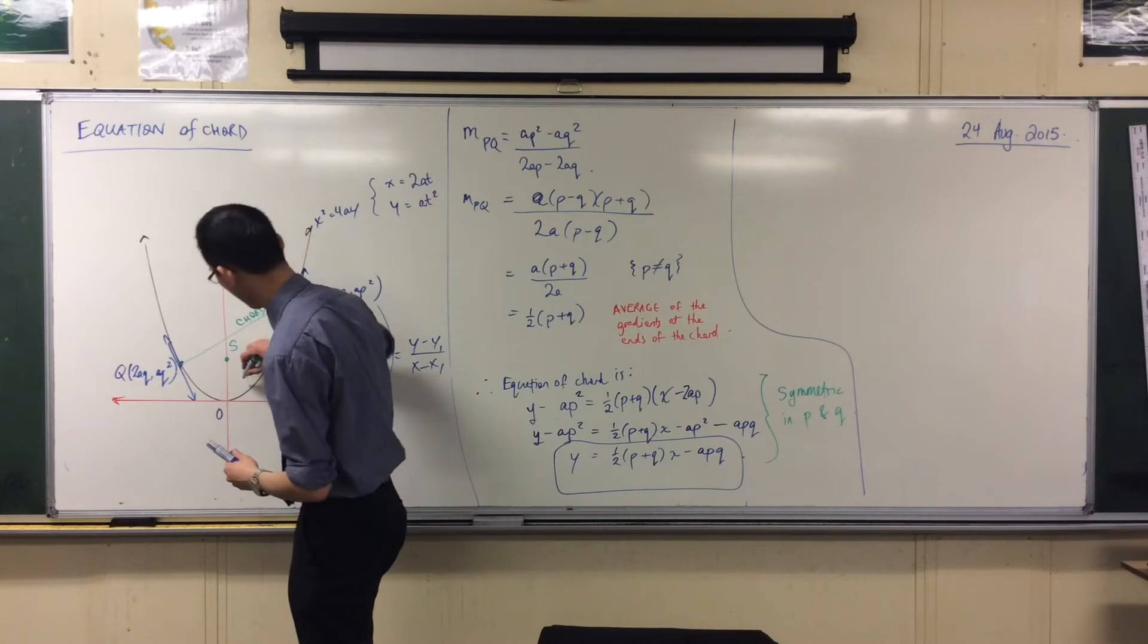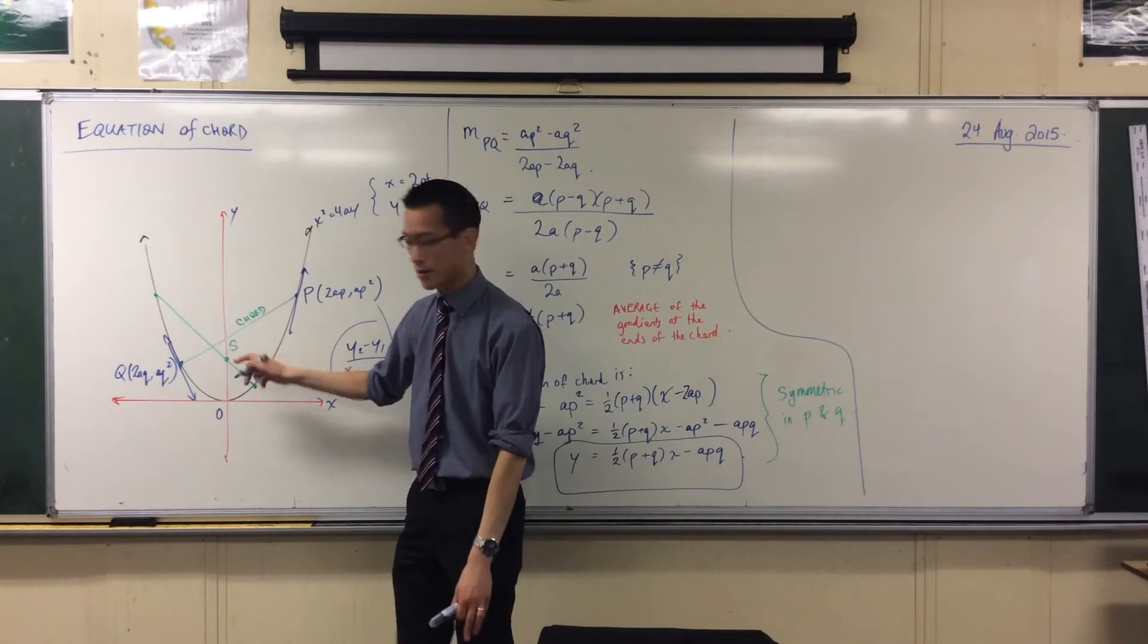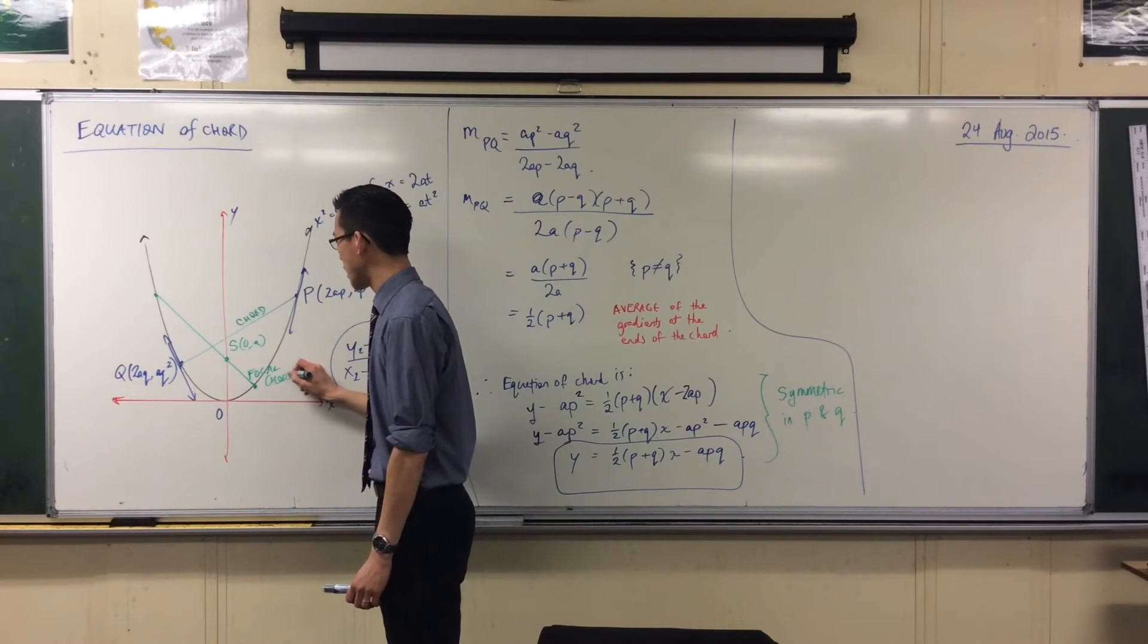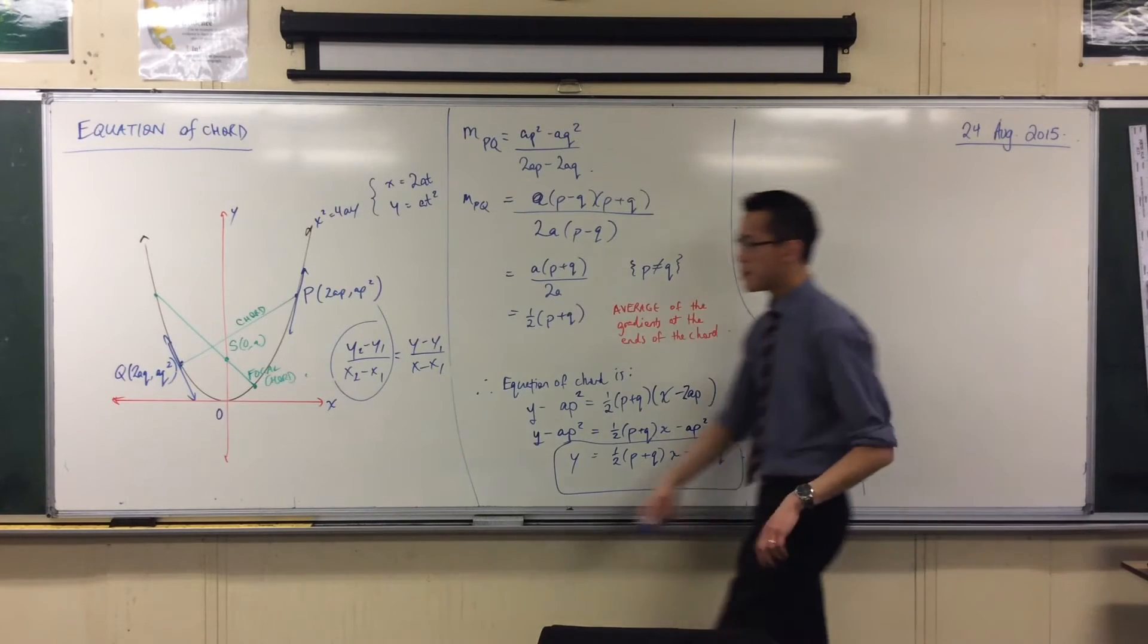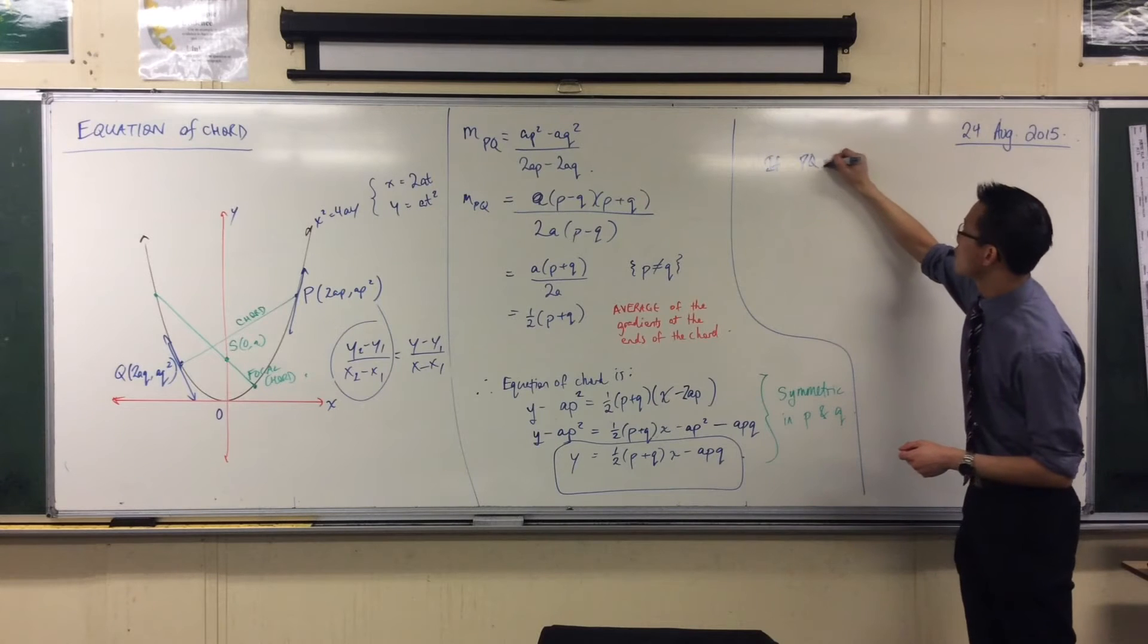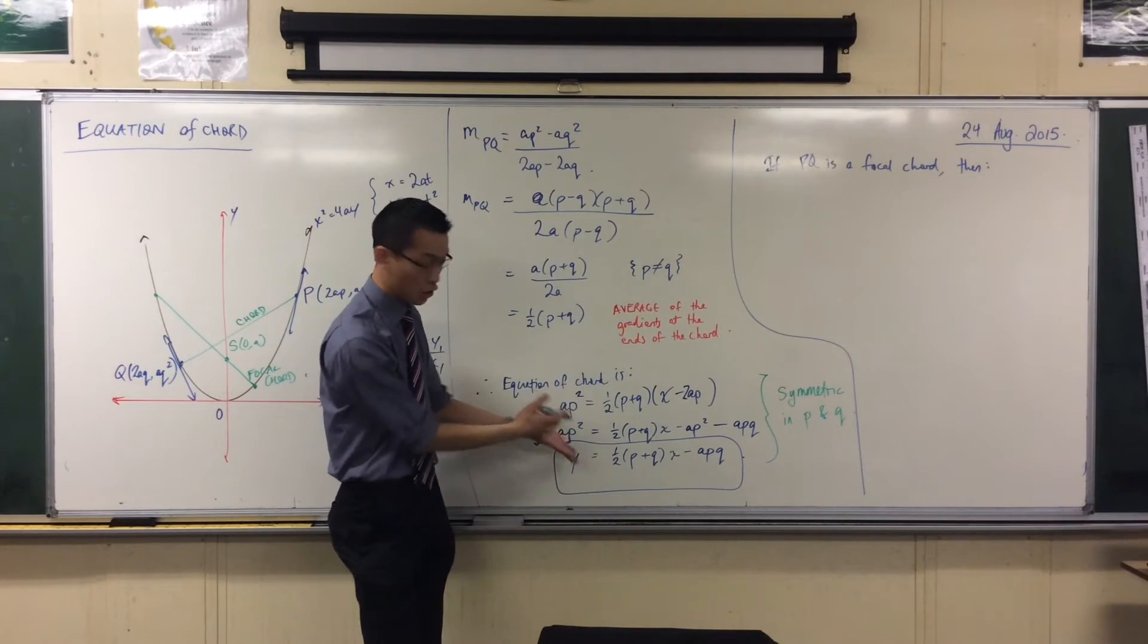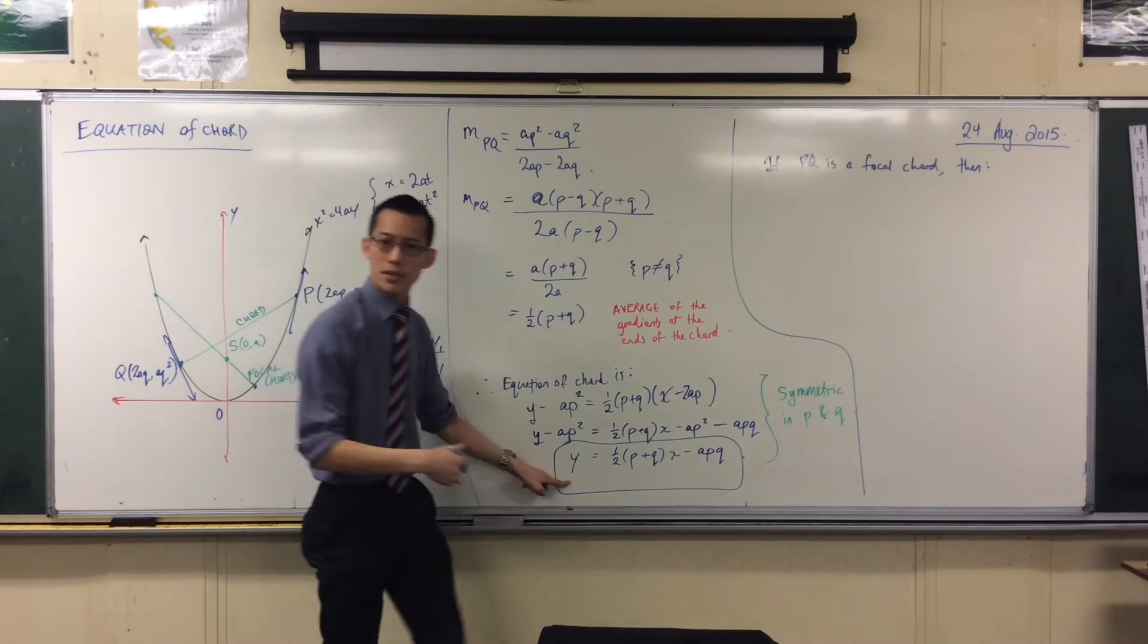So if I have a chord that goes through anywhere, but it passes through S, which is, on this one, 0, A, and obviously, if I had some kind of shift, or it was upside down, it would be elsewhere, and I'd have corresponding coordinates, we call this guy a focal chord. Now, focal chords are kind of interesting, and it's really easy to see why. If this is the equation of a chord, and it passes through the focus, that means 0, A should satisfy this equation. So I'm going to say, if PQ is a focal chord, then I should be able to put in these coordinates, and out will come something true.